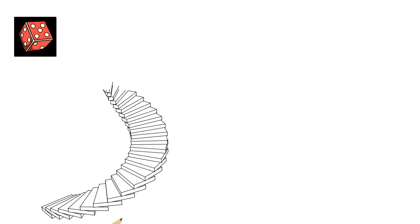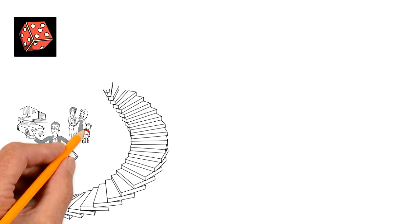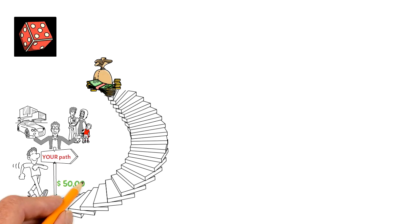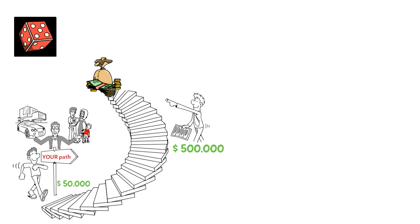Rule number four, money is a game. Understand where you are on your journey today and where you plan to go. If you want to become a millionaire and you have $50,000 today, you are playing a whole different game than someone with the same target but with $500,000 already.